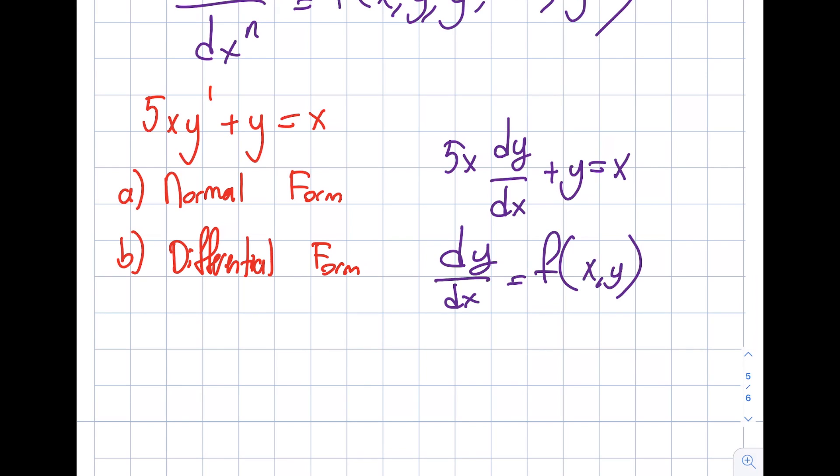Let's do it: dy/dx. I'm going to manipulate this to 5x(dy/dx) and move y to the right-hand side, so it's x - y. Let's divide both sides by 5x, assuming x is not 0. I'm going to get (x - y)/(5x). So this is pretty much it. Do you see the difference? This is the normal form. You can see it's not a big deal.